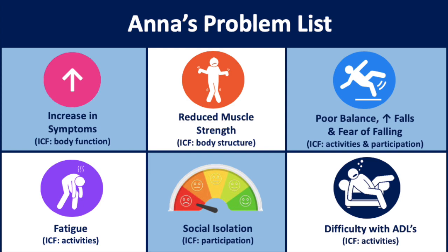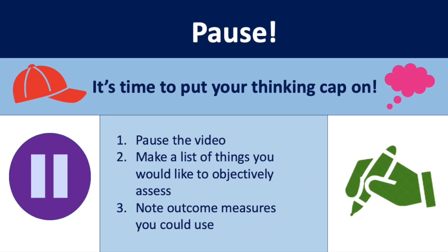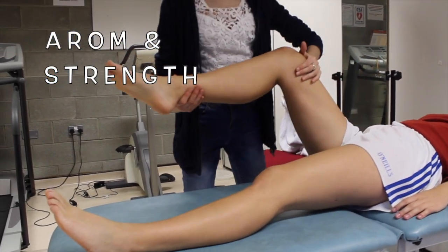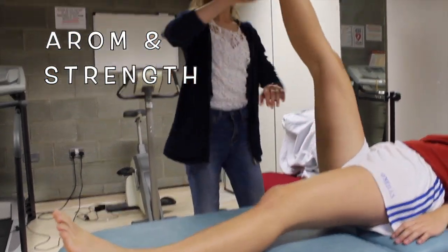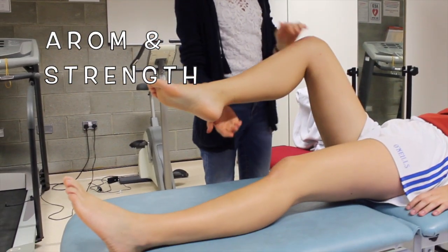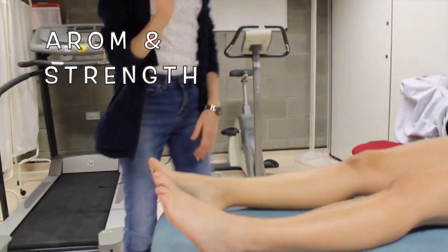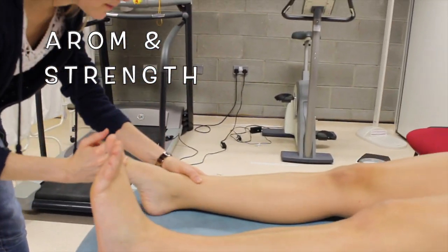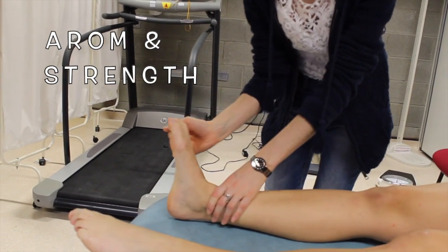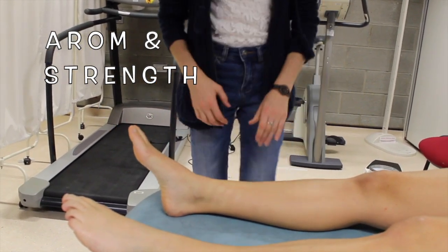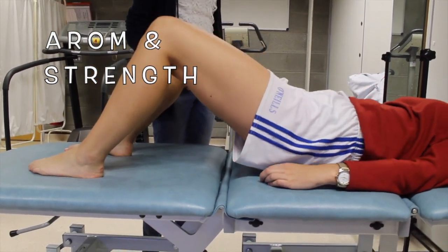Now it's time to put your thinking cap on. Pause the video and make a list of things you would like to objectively assess, and note any outcome measures you could use. The physiotherapist is now assessing active range of motion and testing isometric strength using resistance against lower limb movements. The Oxford grading scale for muscle strength will be used as an objective measure. It is important to assess active ROM as individuals with MS can have reduced range of motion which can lead to contractures if untreated.